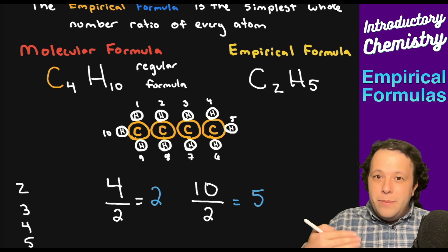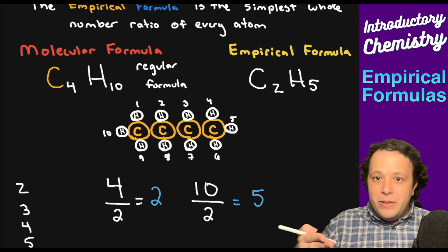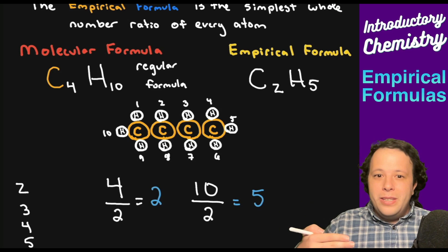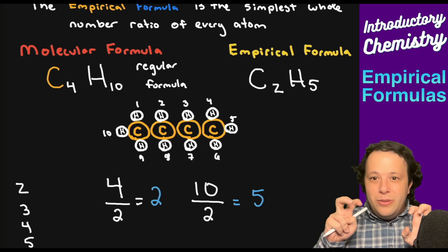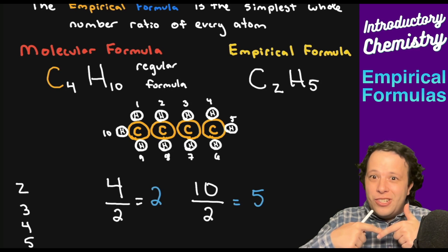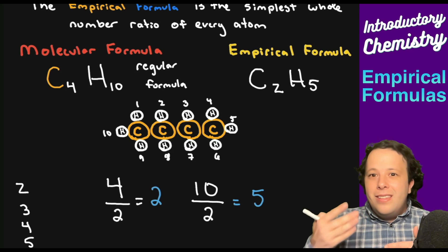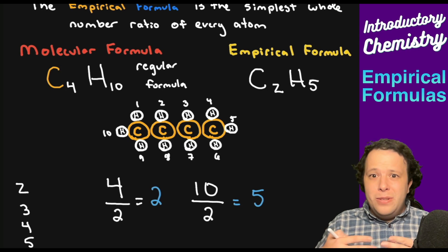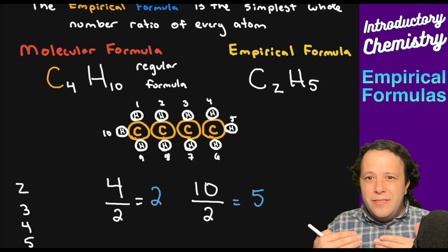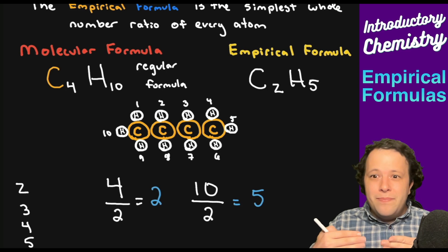The reason empirical formulas are so important has multiple reasons. One has to do with ionic compounds, which we only find in formula units when you are trying to figure out how charges cancel out. The other way is, when you're in the lab, the only thing you can do is measure a sample, which is a specific percentage of each individual element, so you have to be able to decipher what all those things mean.